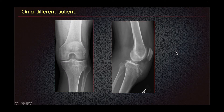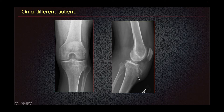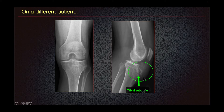This is a different patient. On the knee, marginal erosions could be seen in the tibial and femoral condyle. On this specific case, we can see the gouty tophi at the tibial tubercle, characterized by the soft tissue lesion with some calcification in it.